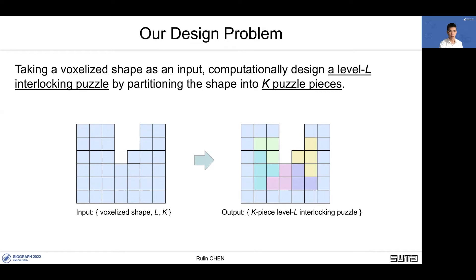This is a 2D example. The left one is the input voxelized shape. Users can specify level-L and piece number k. The right one is the puzzle we design, which is a k-piece level-L interlocking puzzle. Here, k and L both equal 6.